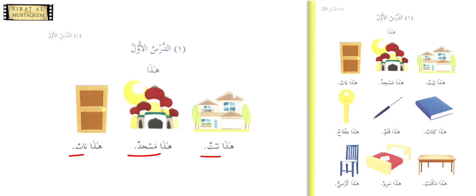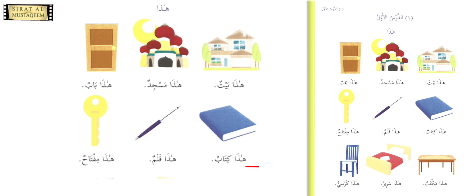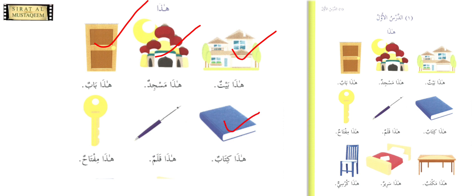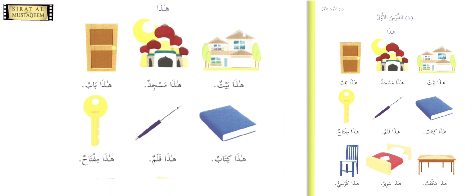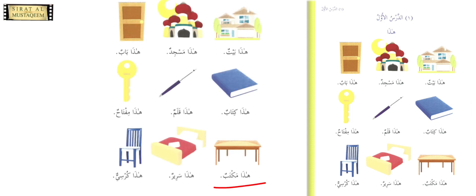There must be specific reasons why we would say 'baitin' or 'baitan' or 'baitu' — we will study all of this as lessons progress, via examples. So: 'haza baitun' — this is a house; 'haza masjidun' — this is a masjid; 'haza baabun' — baab means door; 'haza kitabun' — kitab means book; 'haza qalamun' — qalam means pen; 'haza miftahun' — miftah means key; 'haza maktabun' — maktab means desk; 'haza sarirun' — this is a bed; and 'haza kursiyyun' — this is a chair.